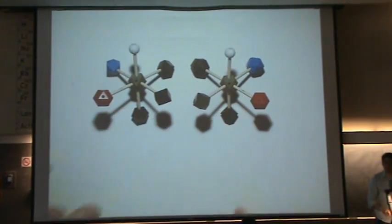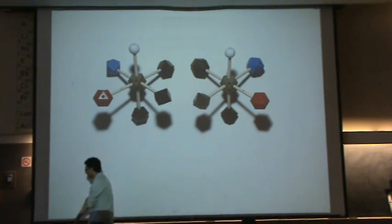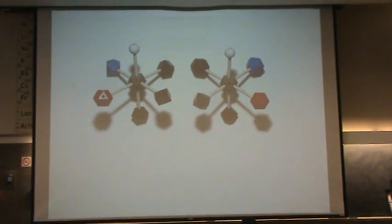So these are non-superimposable mirror images. They are chiral. They are both called enantiomers of each other. And they're optical isomers of each other, to use all the terms. So each one of these molecules are chiral. They're enantiomers. And they're optical isomers. They're not superimposable.